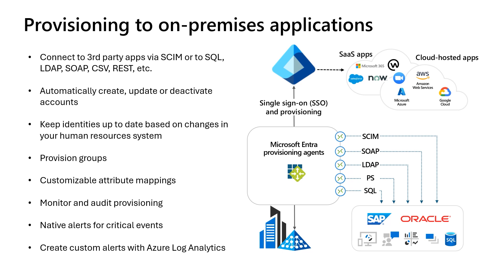When a user is granted access to an application, they often need an account provisioned before they can sign in. When entitlement management assigns a user access to an application in Entra, the provisioning service can automatically create accounts for those users. With about 350 pre-integrated applications, support for any application with a SCIM endpoint, on-prem apps that rely on SQL, LDAP, REST, SOAP, or even just CSV, the provisioning service can integrate with just about any application the organization uses. As users change departments and roles, the provisioning service keeps the identities in sync and deprovisions access when the user doesn't need it anymore.